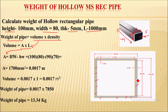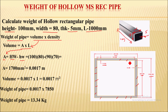We are provided with the external dimensions, that is 100 by 80 mm. From the thickness of 5 mm, we will get the internal dimensions to be 90 by 70 mm. So area A is equal to the area of the external rectangle minus the area of the internal rectangle: 100 × 80 minus 90 × 70.